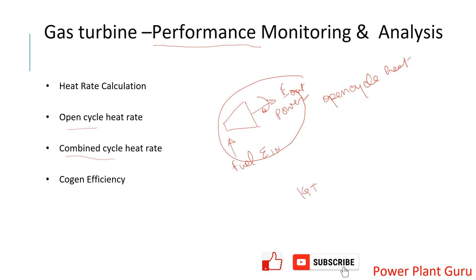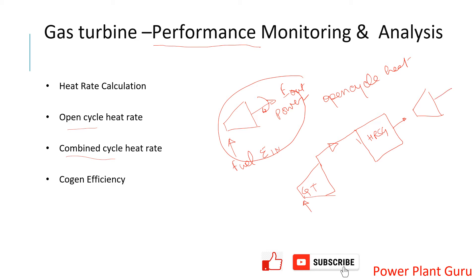Now let's say you have a different system where you have one gas turbine consuming some fuel, and then your hot gases go to an HRSG. The HRSG generates some steam, which goes to a steam turbine generator (STG).